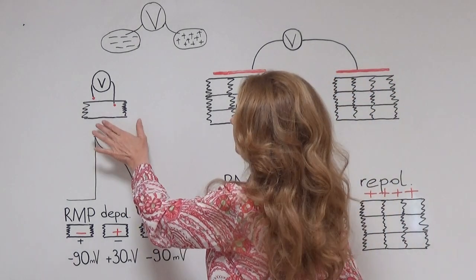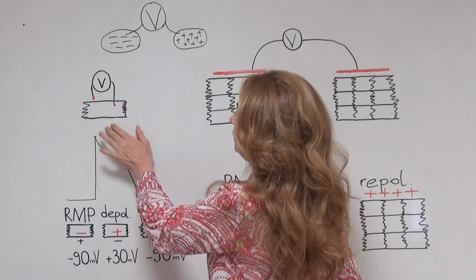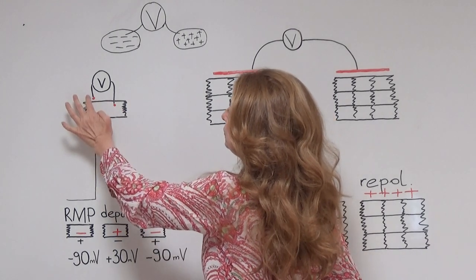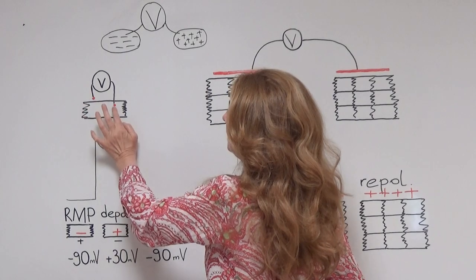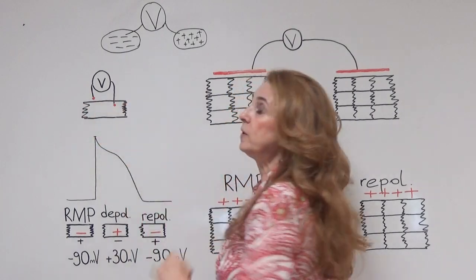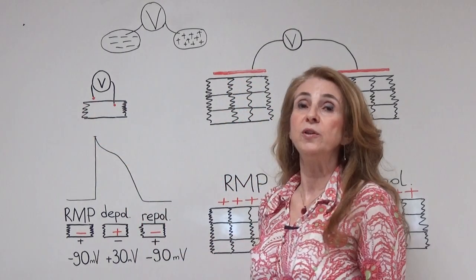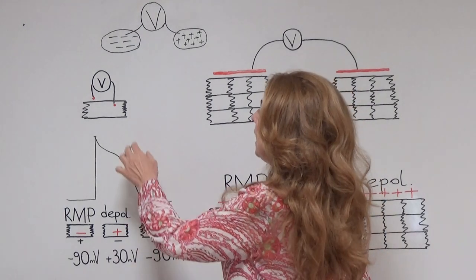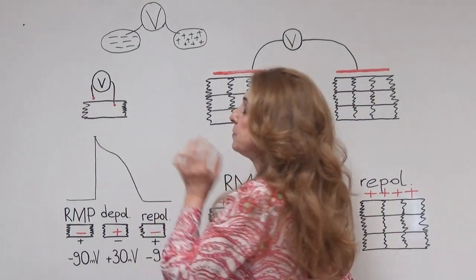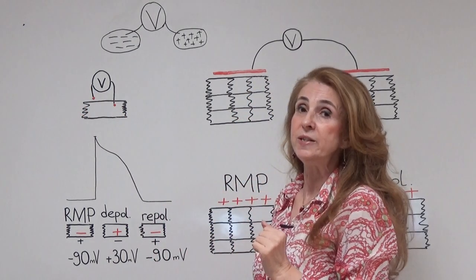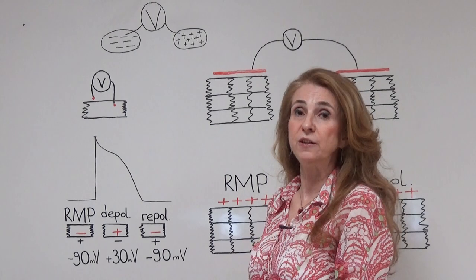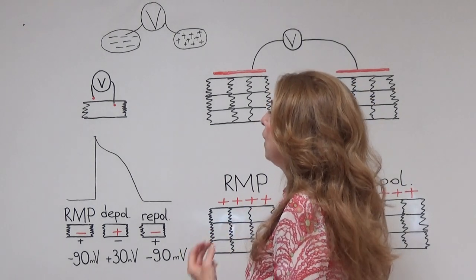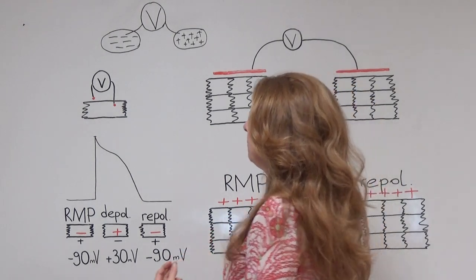In an intracellular recording we record from one cell — one of our electrodes is placed outside and the other is placed on the inner side of the membrane, and we measure the bioelectrical potential difference between the two sides of the membrane.